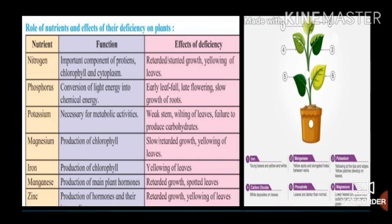In this video, we studied about nutrition, types of nutrition, the transport system in plants, biological nitrogen fixation, and autotrophic nutrition of plants. In our next video, we are going to study nutrition in animals and types of nutrition in animals according to the type of food. Thank you.